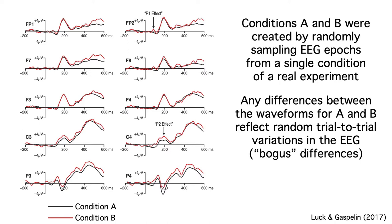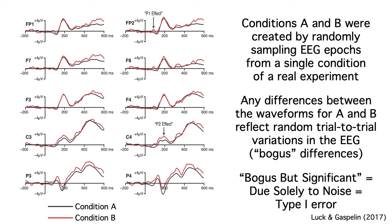In other words, the null hypothesis is true at every time point in every channel. But if we look at the data before choosing the time windows and electrode sites for analyses, we're bound to find some bogus but significant effects. By bogus, I mean purely a result of noise — I like that term better than type 1 error, since it's clear what it means even though the effect was statistically significant. You can also think of that as a false positive.